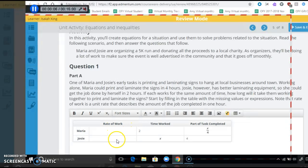So we need to find their rate of work, the time that they worked together, and the part of the task they completed. And so for their rate, Maria can do one job, so we're calling it a job, one job in four hours, which is one-fourth of a job per hour. Josie can do one job in two hours, so that's the same as a half of a job per hour.